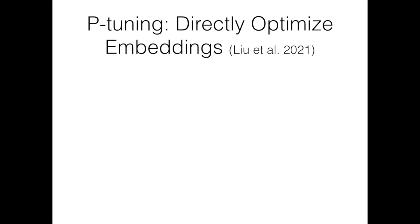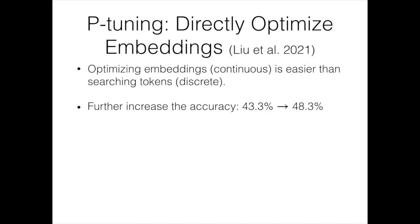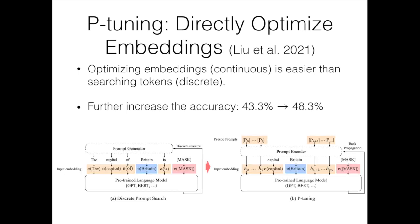The next paper is called P-Tuning. Whereas AutoPrompt searches discrete tokens, P-Tuning directly optimizes the embeddings of the tokens in the prompts — a continuous approach that is hopefully easier to optimize. The input embeddings H0 to HM (for M tokens in the prompt) are directly optimized. This further increases performance from 43% to 48%.